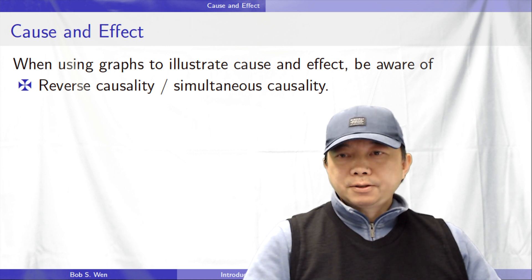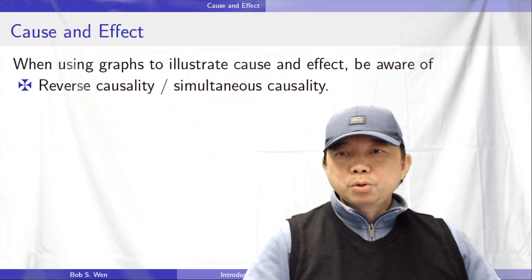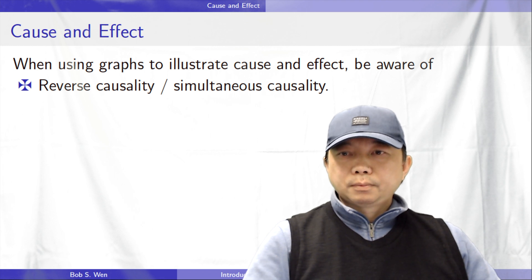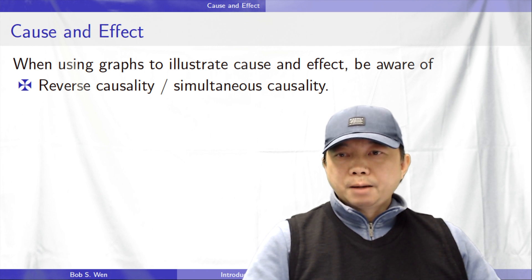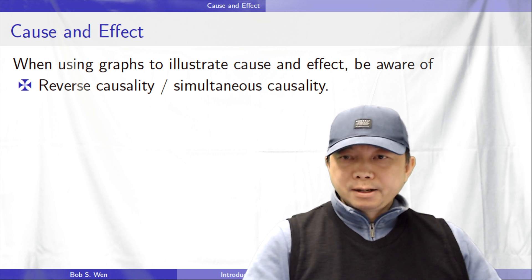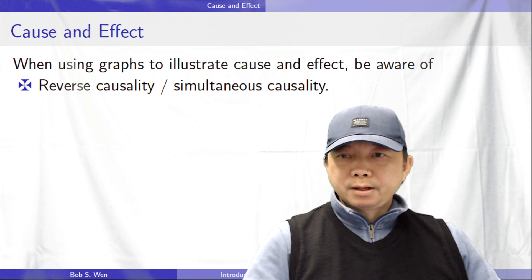In many cases, causality is a two-way process. A affects B and B also influences A. It is a simultaneous causality. Let me show you the simultaneous causality in the labour market.